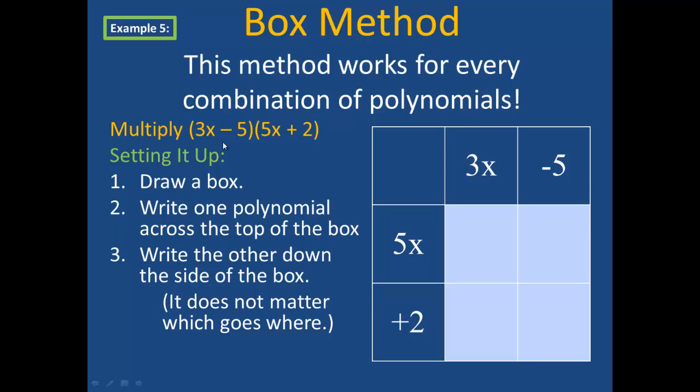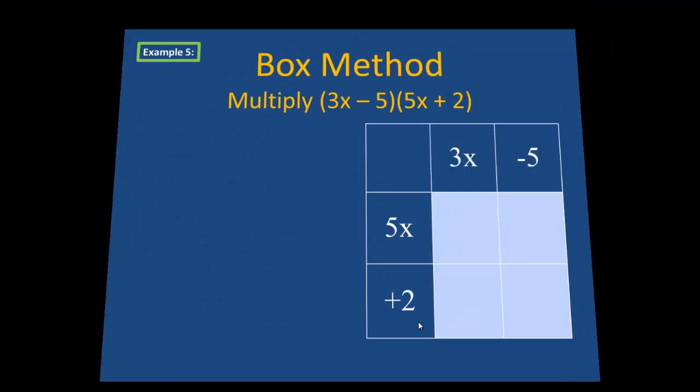So in this example, I took my first binomial 3x minus 5 and wrote it across the top. Notice that I kept the negative sign with the 5. That's to remind me that it's really adding negative 5. And then my second binomial 5x plus 2 is written down the side. Once the box method is set up, it moves quite quickly.